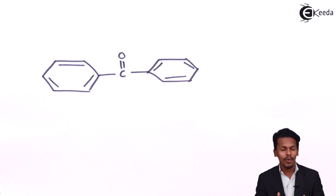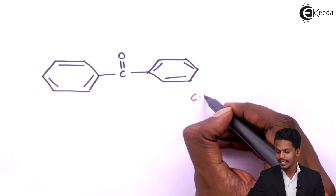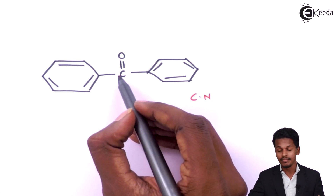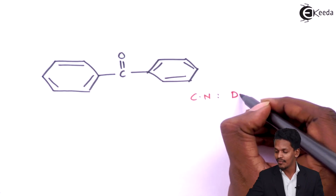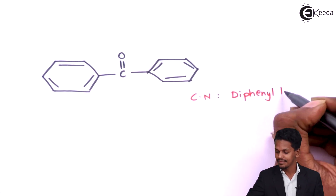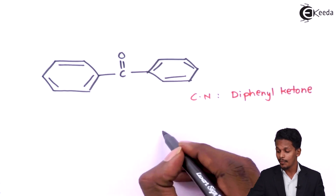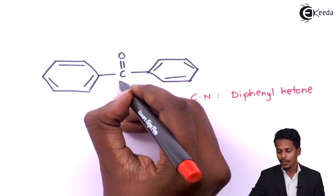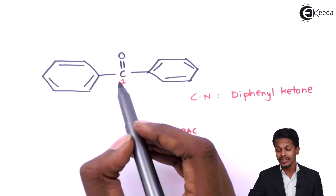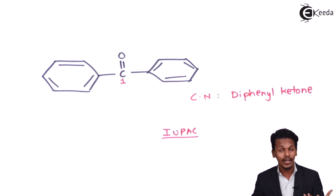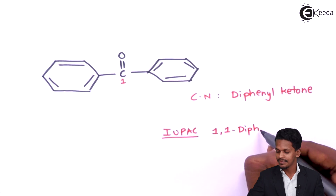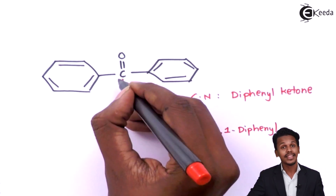The next compound has two phenyl groups attached to the carbonyl, so the common name is diphenyl ketone. For IUPAC nomenclature, there is only one carbon atom present, with two phenyl groups attached. Therefore, the IUPAC name is 1,1-diphenylmethanone.